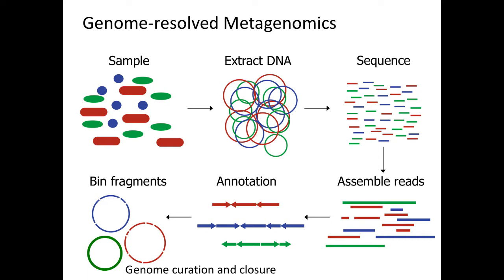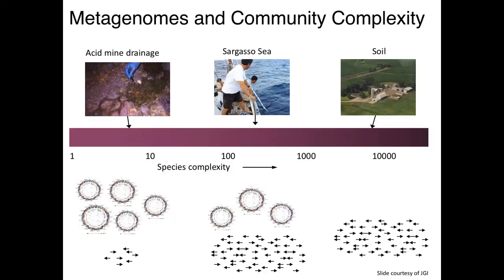That 70% complete / 10% contamination threshold is a reasonable point at which you can start looking at an organism's metabolism meaningfully. If you have a genome that's really clean but only 23 percent complete, there's only so much you can do, because for missing pathways you'll never know if they're genuinely absent or just missed in sequencing.